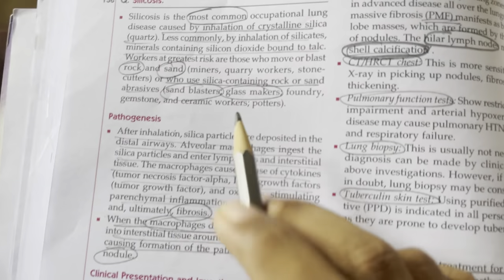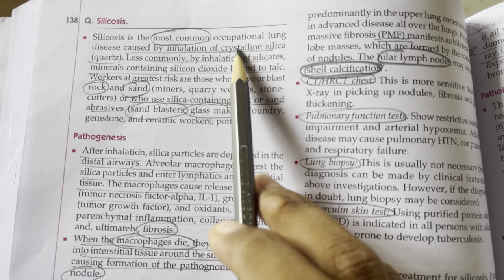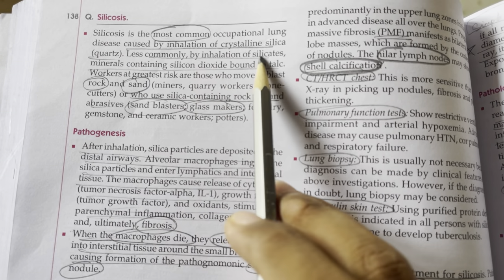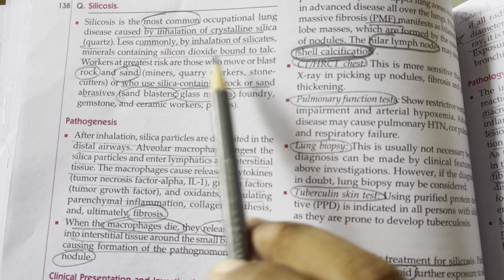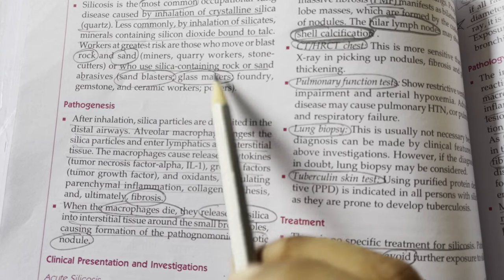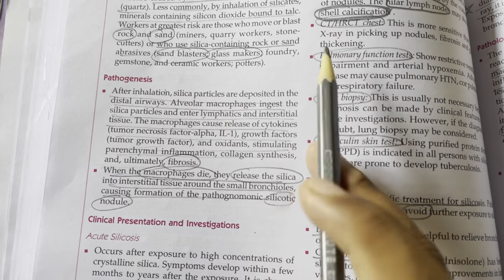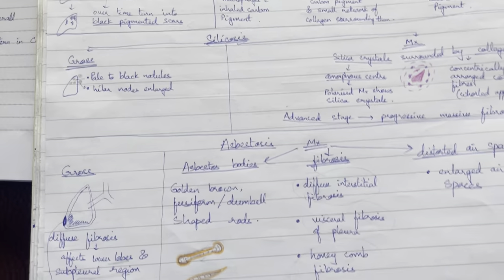Silicosis is the most common occupational lung disease, caused by inhalation of crystalline silica particles. It affects rock and sand miners, glass makers, and sand blasters. After inhalation, silica particles are deposited in the distal airways.